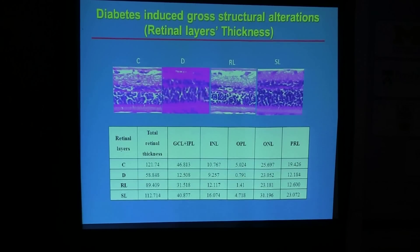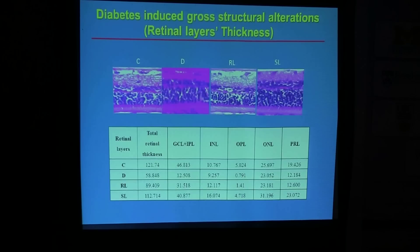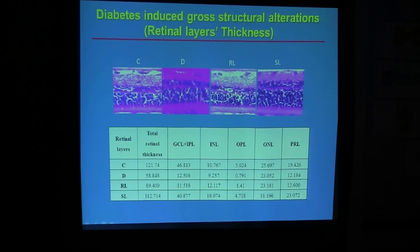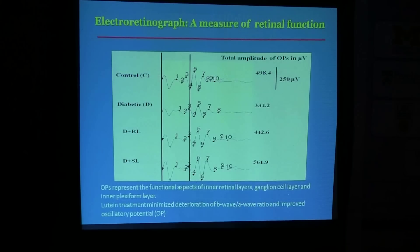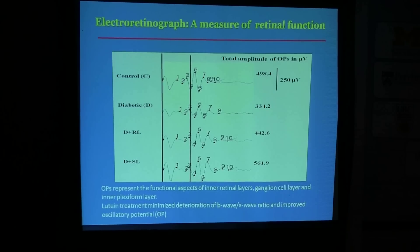We looked at gross structural alterations. This study was conducted at the National Institute of Nutrition, Indian Council of Medical Research in India. You can see how gross structural alterations occur in diabetes, and while regular lutein also shows some changes, soluble lutein really improved the total retinal degeneration. We also looked at ERG with supplementation and in the diabetic model — the lutein treatment minimized the deterioration and improved the b-wave amplitudes.